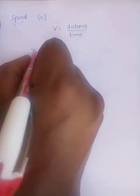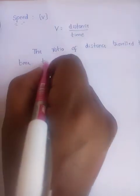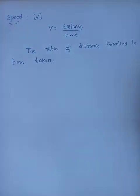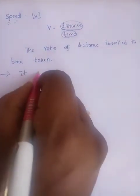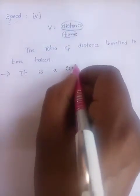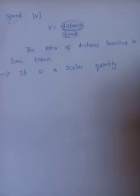We can define speed as the ratio of distance travelled to time taken. The ratio of distance travelled to time taken is called speed. Distance is a scalar quantity and time is also a scalar quantity, so speed is a scalar quantity which depends only on magnitude and is independent of direction.